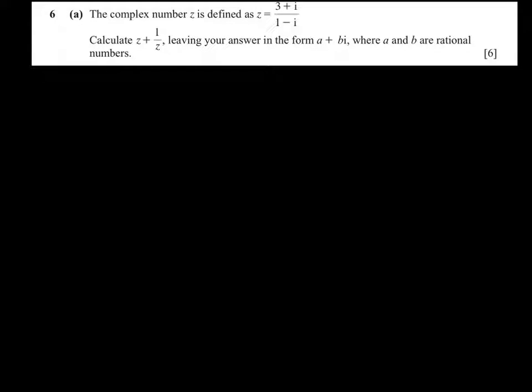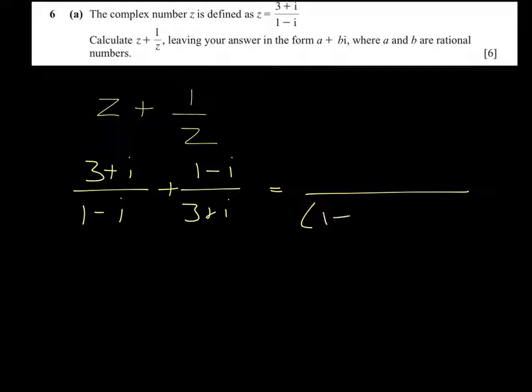So we want to do z plus 1 over z. The first thing that we need to find is 1 over z, so that is 3 plus i over 1 minus i plus 1 minus i over 3 plus i. We need a common denominator, so 1 minus i upon 3 plus i.